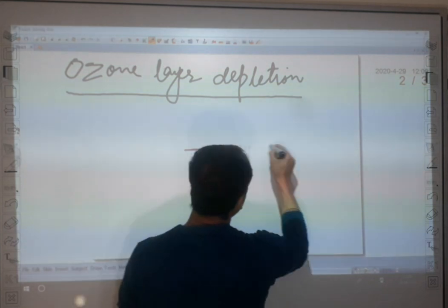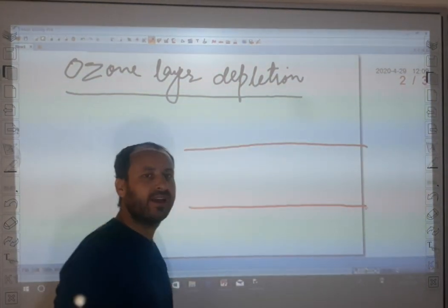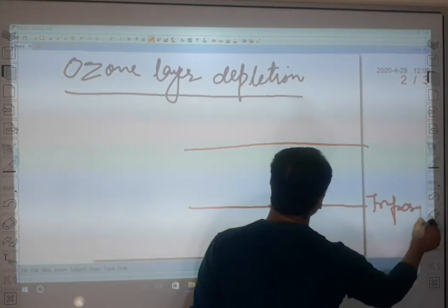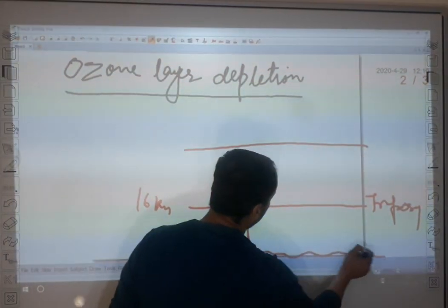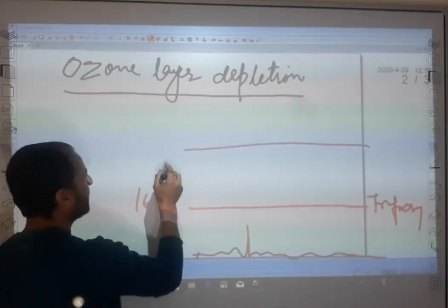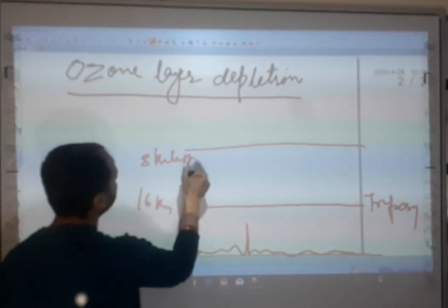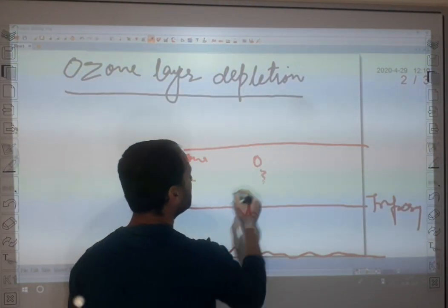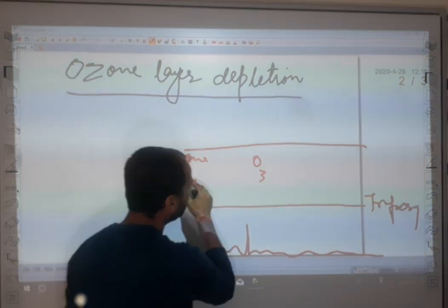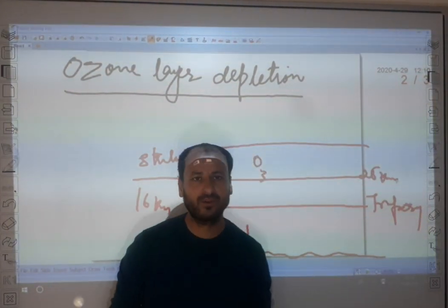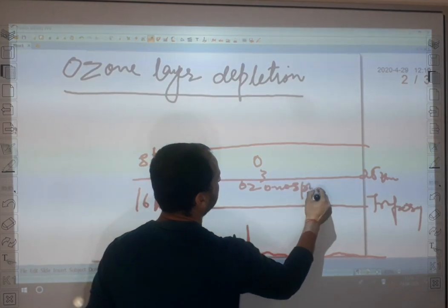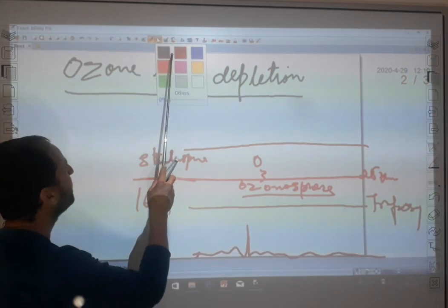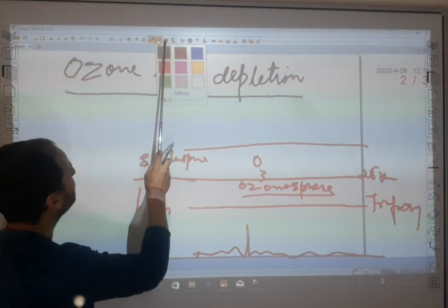Then we have ozone layer depletion. As already discussed, we have layers of the atmosphere. The lowest layer is the troposphere, extending up to 16 kilometers from the surface of the earth. Above the troposphere is the stratosphere. In the stratosphere, the concentration of ozone is very high, and at around 25 kilometers altitude, the amount of O₃ is highest — this zone is known as the ozonosphere, where the presence of O₃ is very much higher.